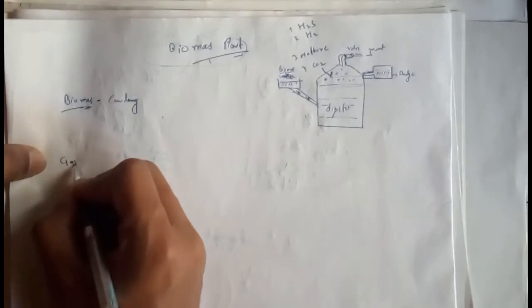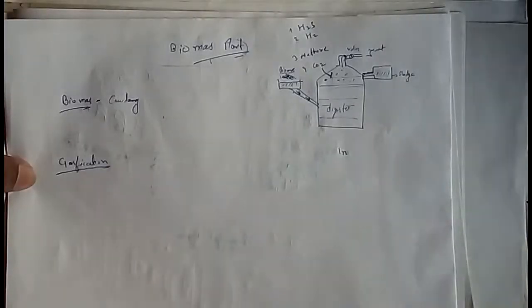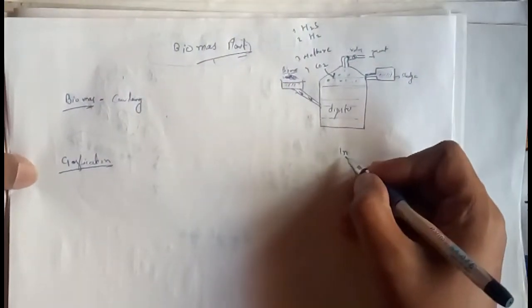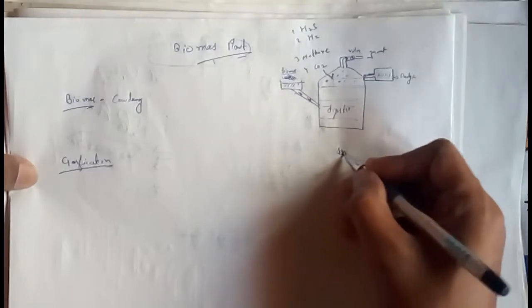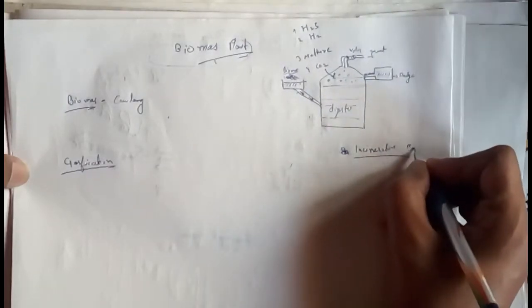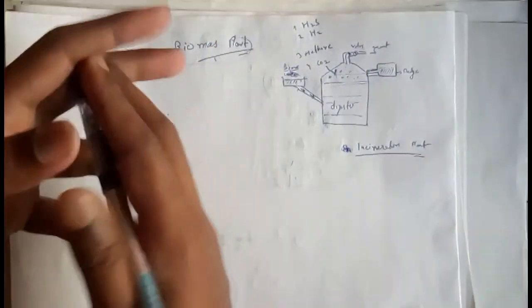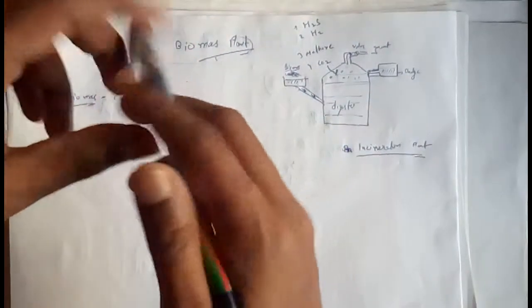Getting gas from the biomass can be done by two processes — one is known as gasification and the other is known as incineration. With incineration, we get the idea that something is burning — incineration means to burn. Both processes produce gas, but what is the difference between them?